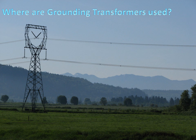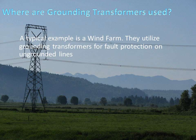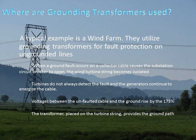So where are these grounding transformers used? A typical example is a wind farm. They utilize grounding transformers for fault protection on ungrounded lines. When a ground fault occurs on a collector cable, it causes a substation circuit breaker to open, and the wind turbine string then becomes isolated from ground. The turbines do not always detect the fault, and generators continue to energize the cable, driving the fault even further. Voltages between the unfaulted cable and ground rise by root 3. The transformer placed in the system on the turbine string helps provide a ground path once the main circuit breaker is open.